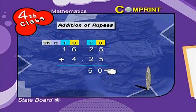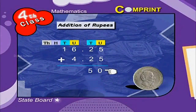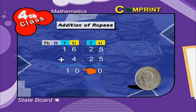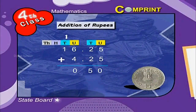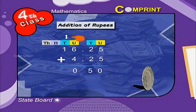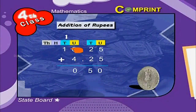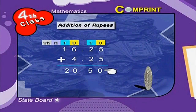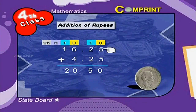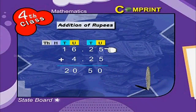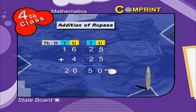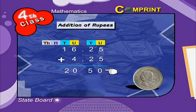Now come to the rupees place. 6 plus 4 is equal to 10. 1 is carried to the tens place. So 1 plus 1 is equal to 2. Therefore, 16 rupees 25 paisae plus 4 rupees 25 paisae is equal to 20 rupees 50 paisae.